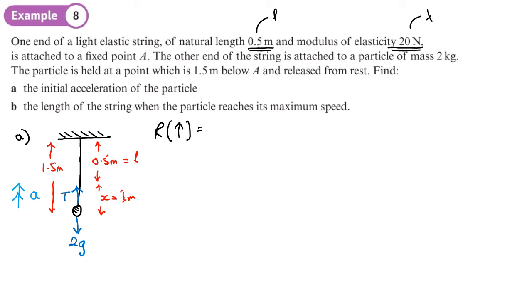So I will have the resultant force will be T minus 2g equals ma, so 2a. So we need to know what T is, so now we can use Hooke's law to find T.